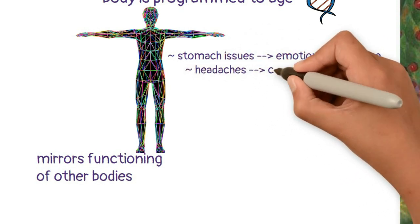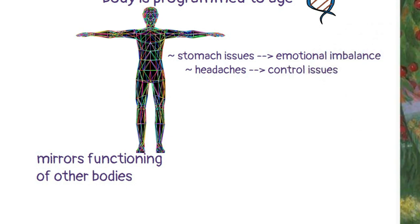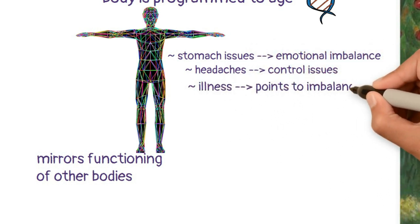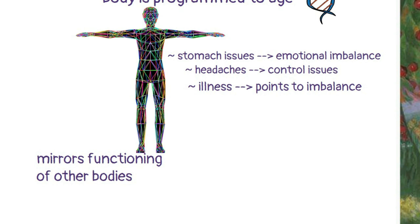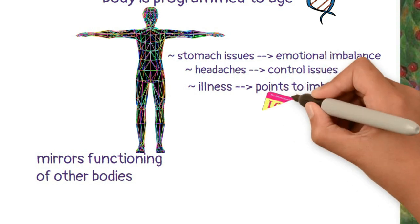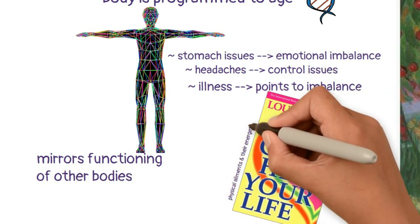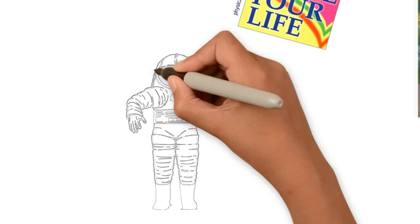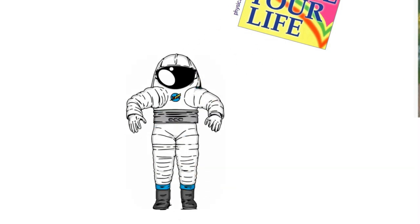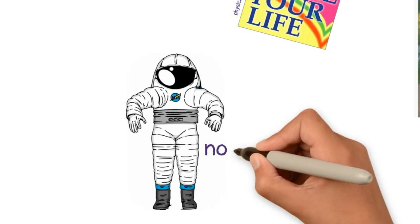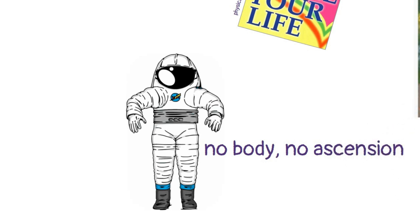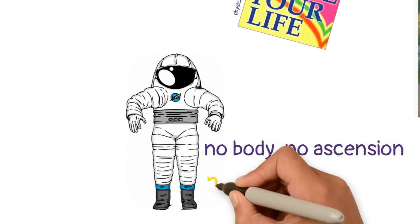Headaches, for example, have to do with control issues. Any illness or dysfunction is a sign that there is an imbalance somewhere and we need to pay attention. If you want to explore this topic, Louise Hay has a book dedicated to different ailments in the physical body and their energetic causes — I highly suggest checking it out. One way to think of the physical body is as a space suit you wear to experience planet Earth. As one of my teachers says, 'No body, no ascension' — we can't ascend this plane without tending to our physical body, and we can't even be in this density without it.